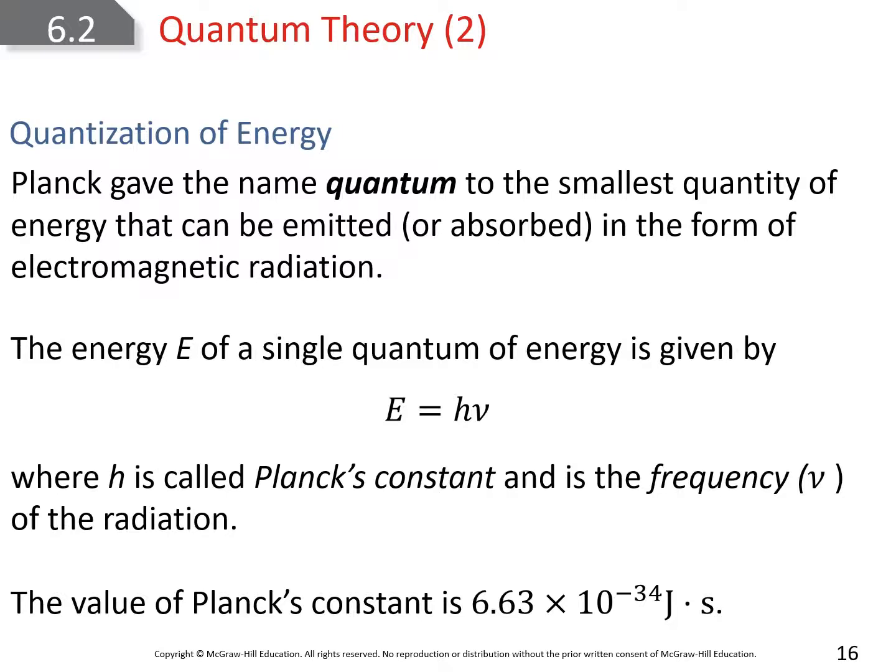Planck could quantize this by the equation where he's measuring the energy of a single quantum of energy by h, which is Planck's constant, multiplied by the frequency nu. The value of Planck's constant is 6.63 times 10 to the minus 34 joules seconds. Not per second because that would be division, but joules seconds. Joules is simply a measure of energy.